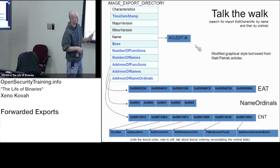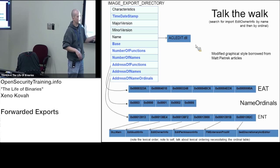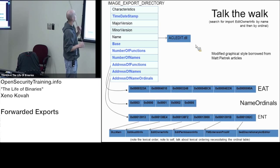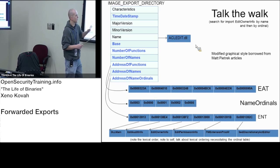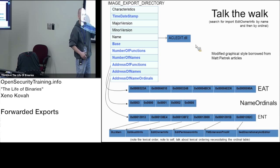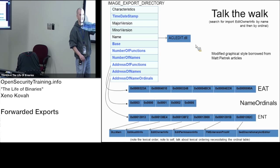It turns out when you have forwarded exports, you can give an RVA that's not pointing out to code - it's going to be within your own module space, but outside the range of the export information. So you'll have an RVA which, instead of pointing at a function, points at a string, and that string says: actually, this function is implemented in some other DLL - like NTDLL dot that function.